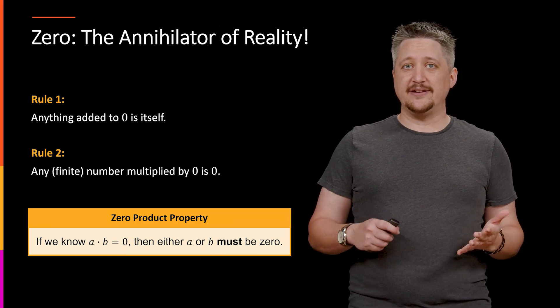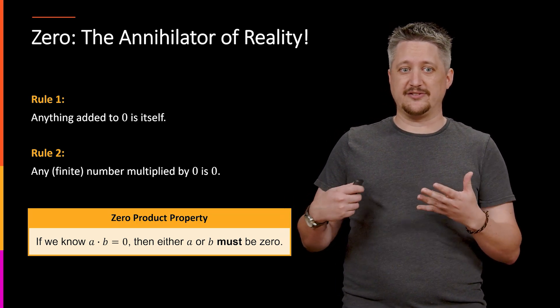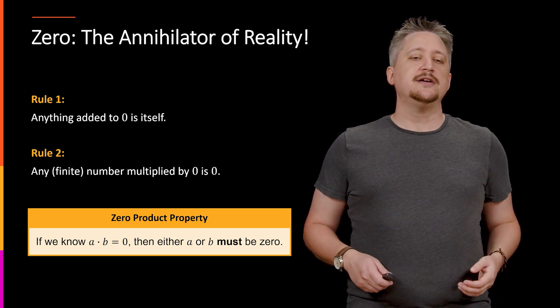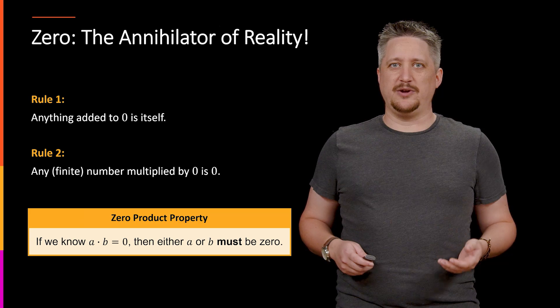So on the one hand, it's clear, right? If one of them is 0, then when we take the product, we get 0. That's the annihilator property. But it may not be entirely clear the other direction. Like, are there any other numbers that work this way?